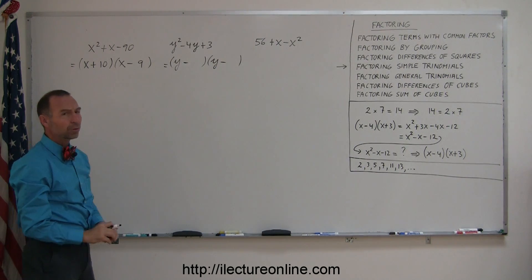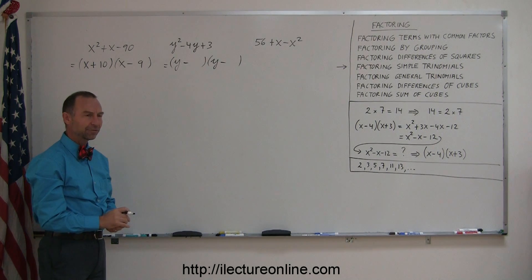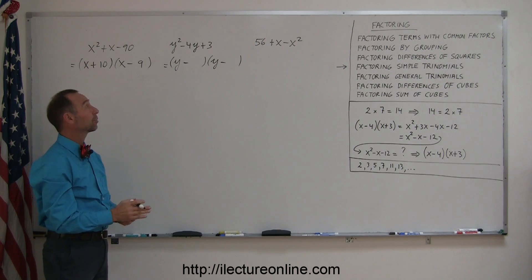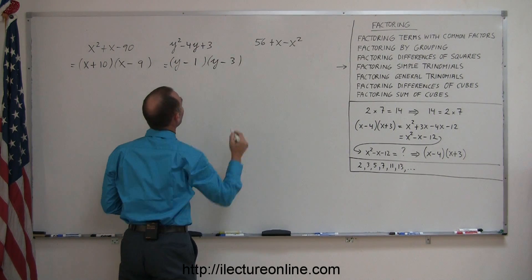Now you need two numbers. When you multiply them together they give you a 3, and when you add them together, a negative 4. So 1 times 3 is 3, and when you add them you get 4, that's the answer. So you need a 1 and a 3.